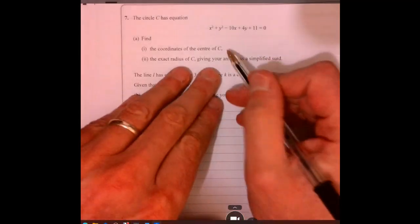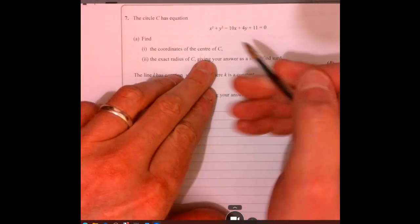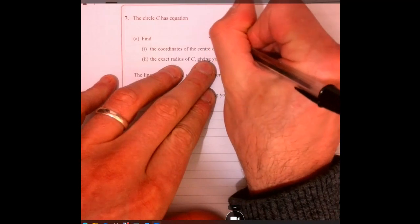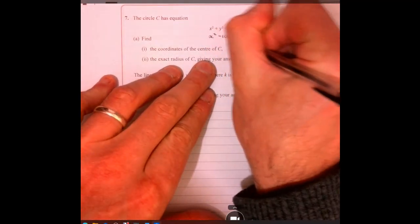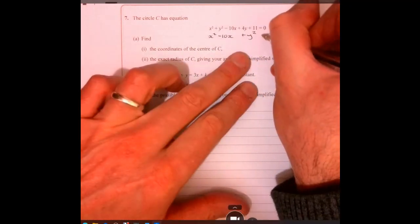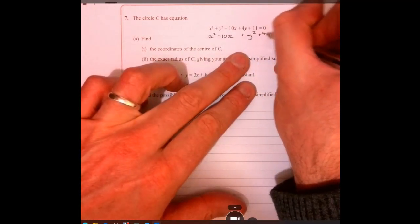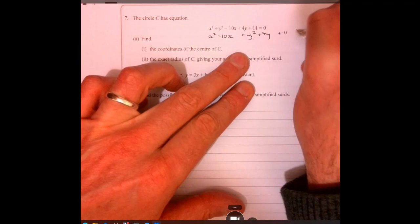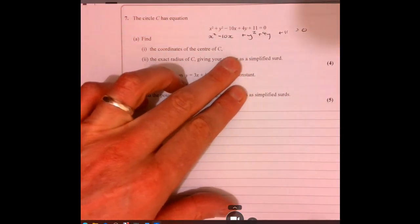Now question 7, so let's just rearrange this here. Let's put the x bits together, and then the y bits together, and then you've got plus 11, and then equals 0.